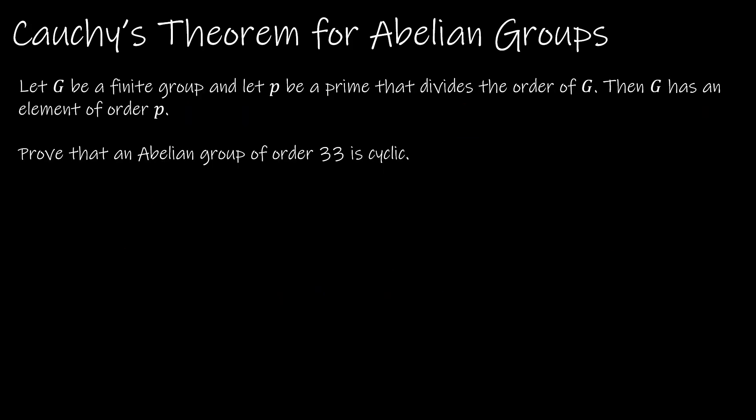Let's finish with one property: Cauchy's theorem for abelian groups. This theorem says let G be a finite abelian group and P be a prime that divides the order of G — then G has an element of order P. Note that unlike Lagrange's theorem, this is not saying G has a subgroup of that order; it's saying there exists an element of that order.